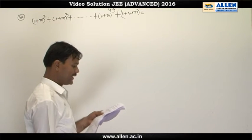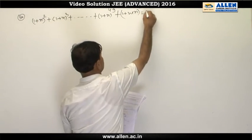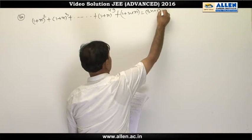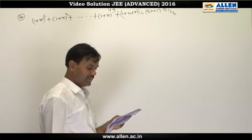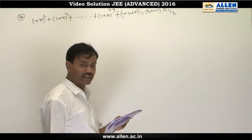is given equal to (3n+1) times 51C3. Now we have to find value of some positive integer n.